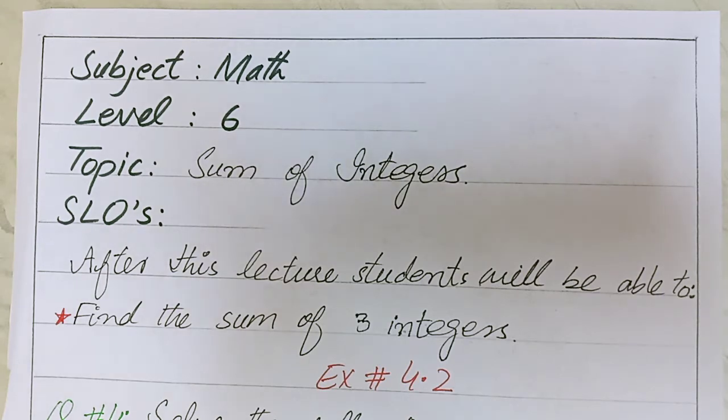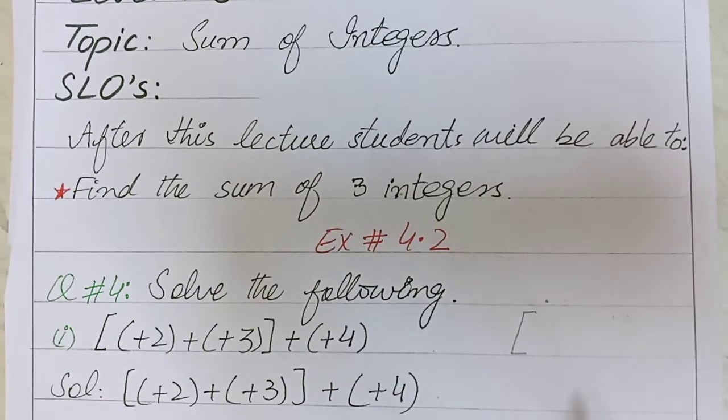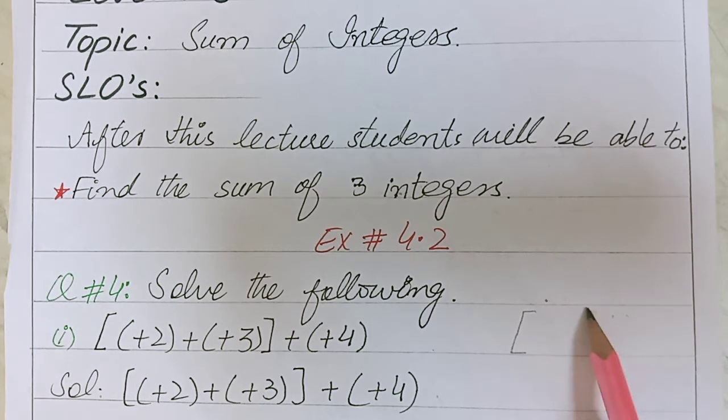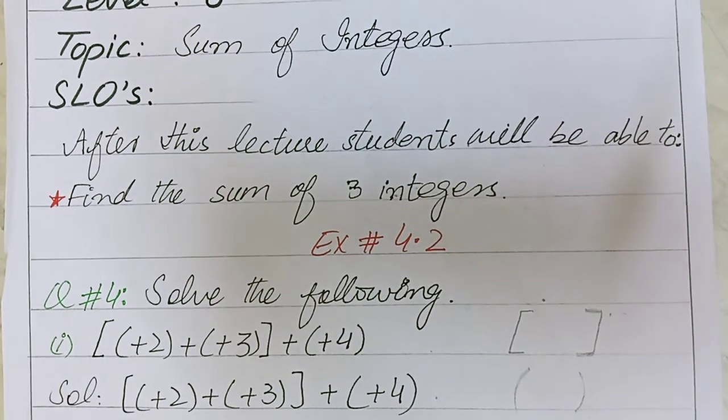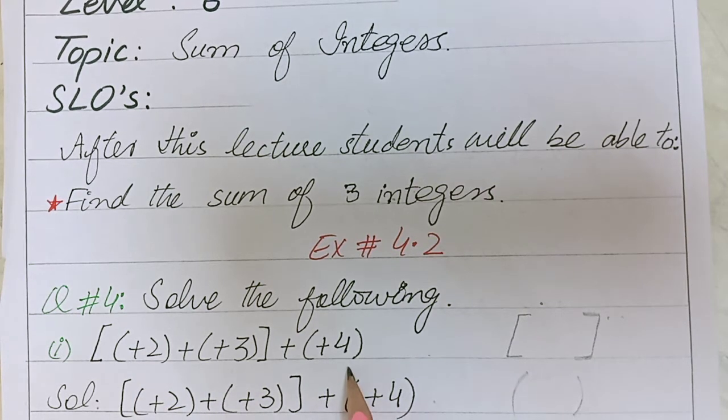Question number 4: Solve the following. Part number 1 has square brackets. These brackets are called square brackets - open and close. And we also have round brackets in this question. You can see here we have three integers.